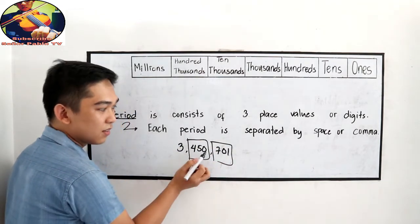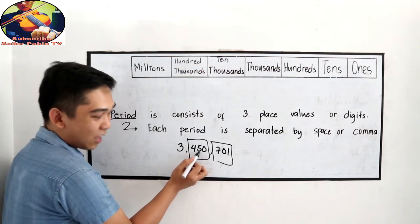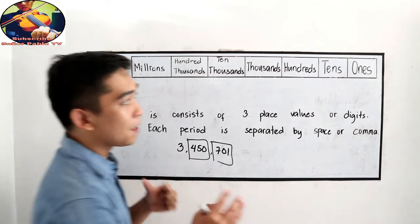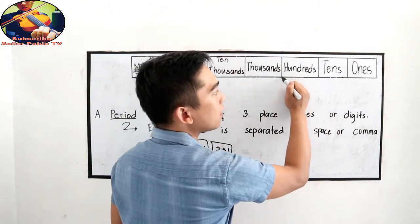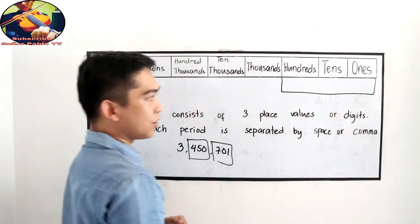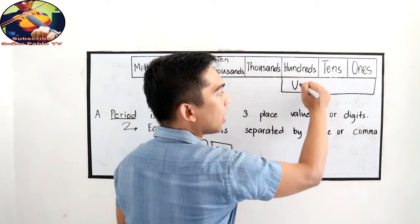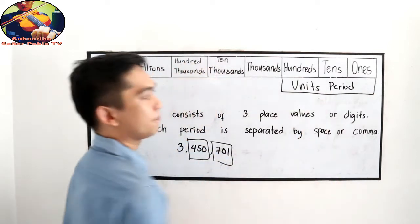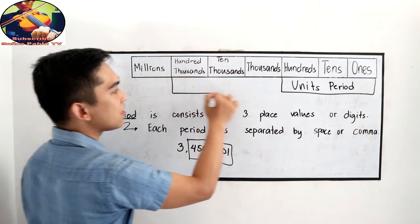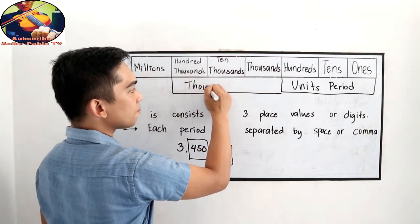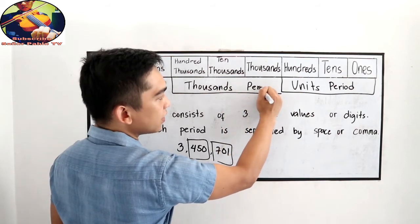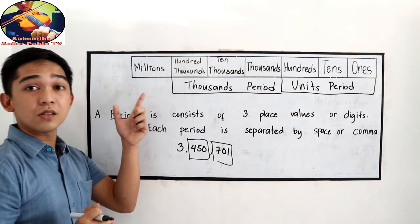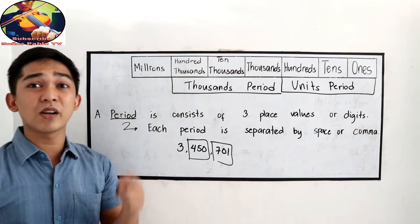Ones, tens, hundreds, thousands, ten thousands, hundred thousands. So if we're going to recall our place value, since the period is grouped into 3, so the first in line in our place value is called under the units period or the unit's period. The next 3 will be in the thousands period. And the other 3 going to the left will be the millions period.